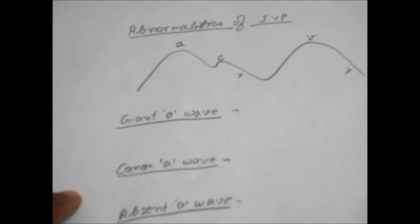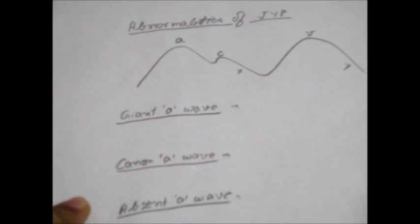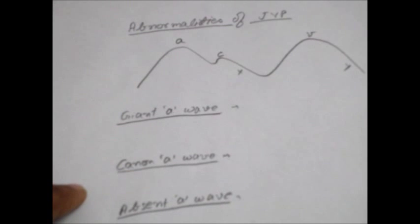Now there are three kinds of abnormalities in A-Wave: Giant A-Wave, Cannon A-Wave, and Absent A-Wave. Let's first discuss the Giant A-Wave.